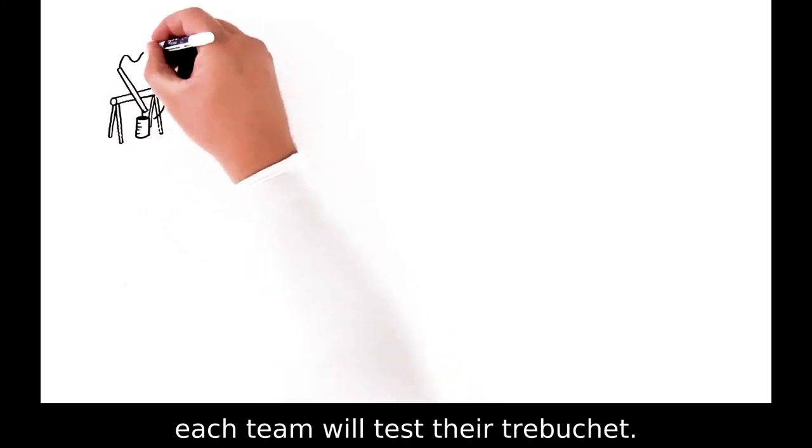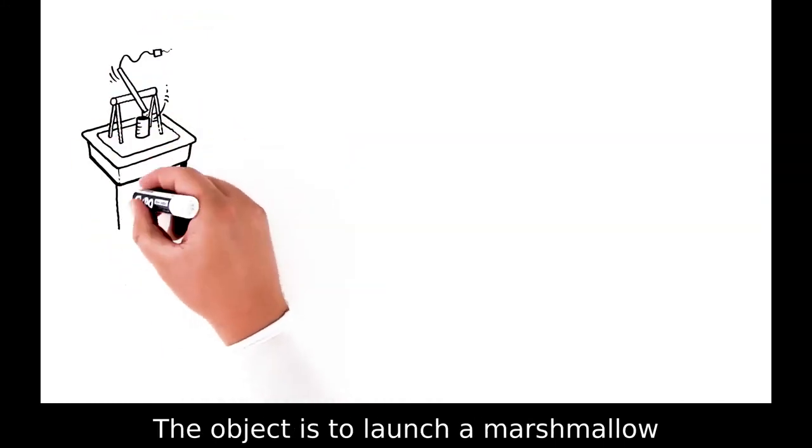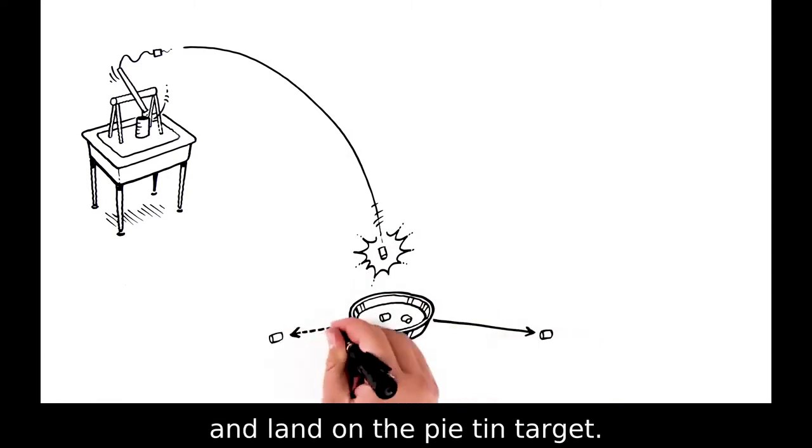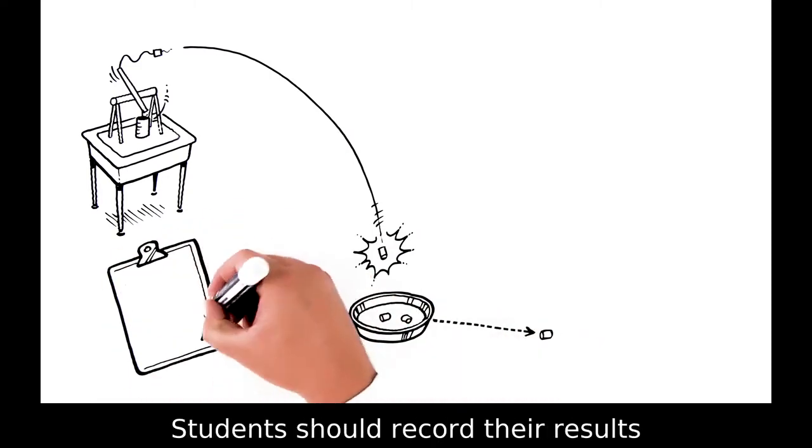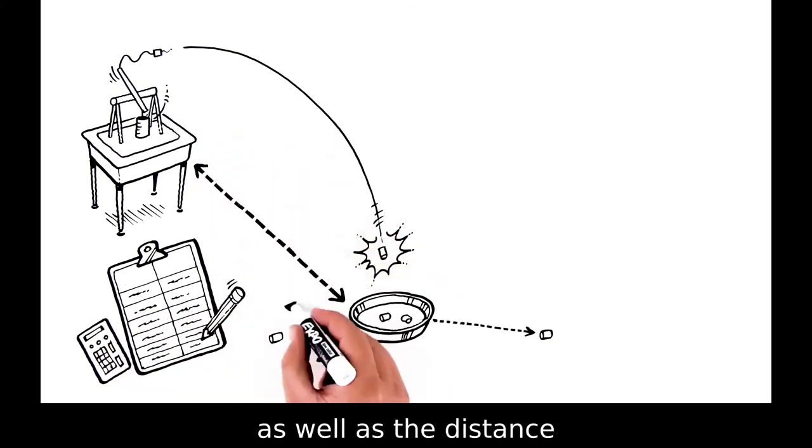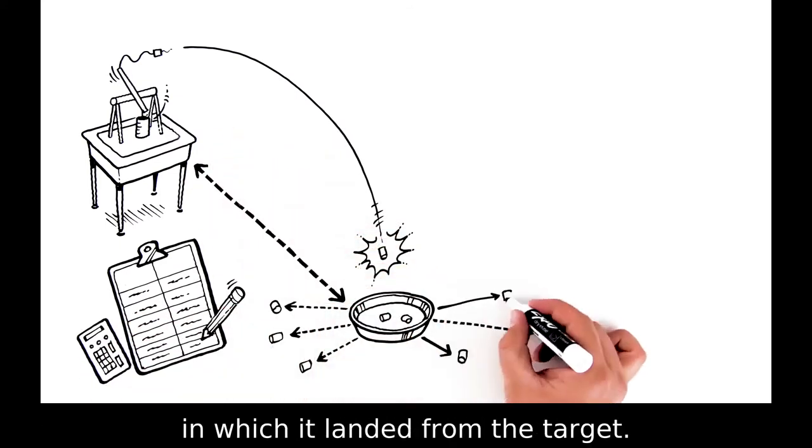Once completed, each team will test their trebuchet. The object is to launch a marshmallow as far a distance as possible and land on the pie tin target. Students should record their results measuring both the distance the marshmallow was launched as well as the distance in which it landed from the target.